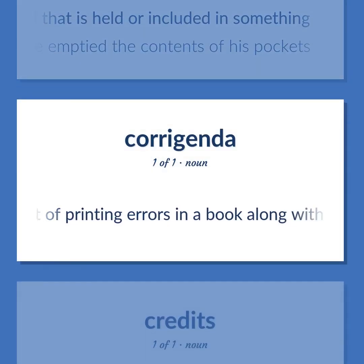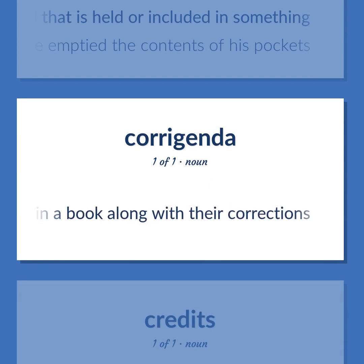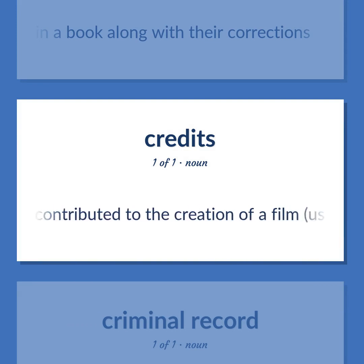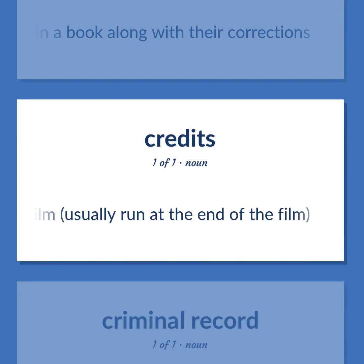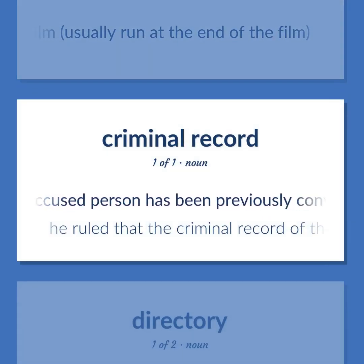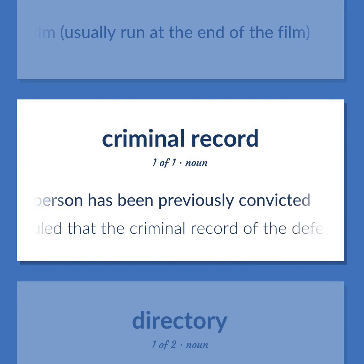Errata: A list of printing errors in a book along with their corrections. Credits: A list of acknowledgments of those who contributed to the creation of a film, usually run at the end of the film. Criminal record: A list of crimes for which an accused person has been previously convicted — 'He ruled that the criminal record of the defendant could not be disclosed to the court.'